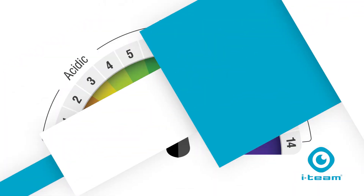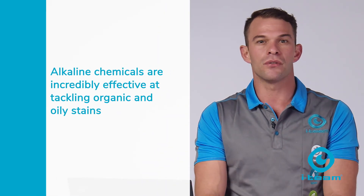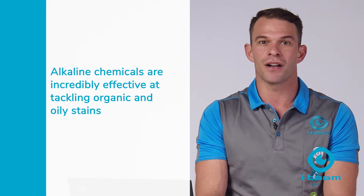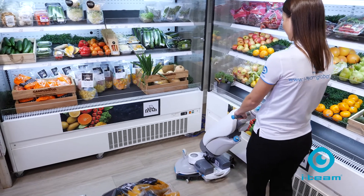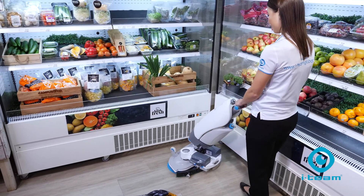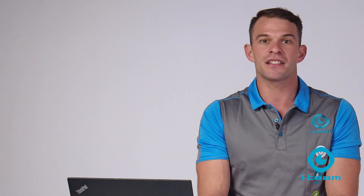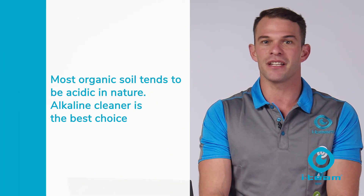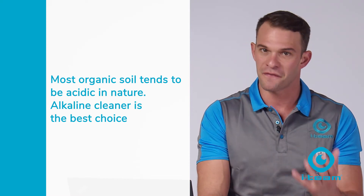On the other side of the pH scale, alkaline chemicals are incredibly effective at tackling organic and oily stains. Think of the oily soil and general dirt buildup you'll find in areas like kitchens, lunchrooms, classrooms, industrial and retail environments. In fact, if it is not a bathroom, washroom or wet area where an acidic product works best, you would use an alkaline cleaner. This is because most organic soil tends to be acidic in nature, making an alkaline cleaner the best choice for fast, effective cleaning.